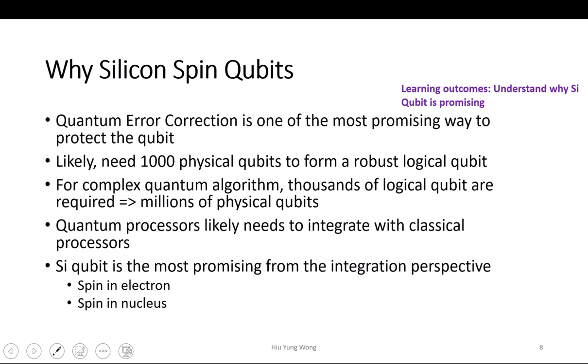Another thing that should not be overlooked is that quantum processors depend strongly on classical control. Just look at the single-qubit gate operation — it also needs classical control. Here we are talking about the magnetic field. How are you going to change the magnetic field with a pulse with the right flux? This all needs classical control, so they need to be integrated with classical processors.